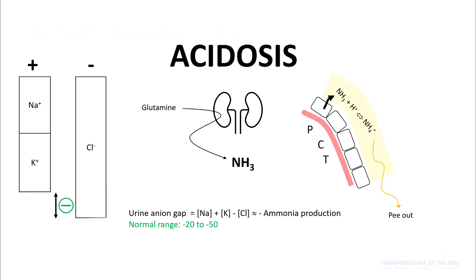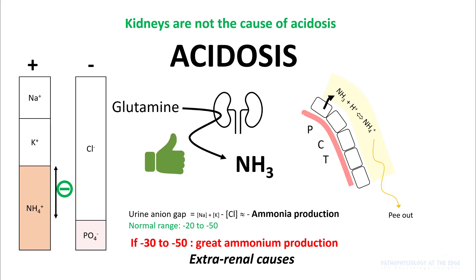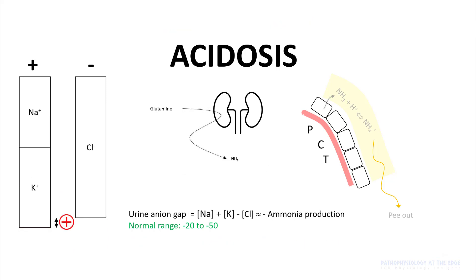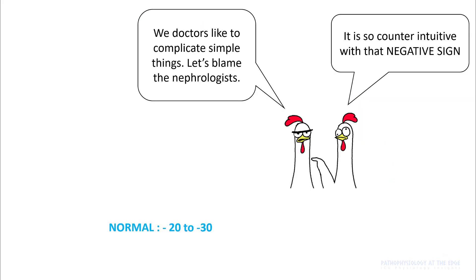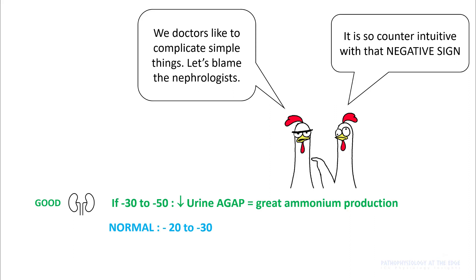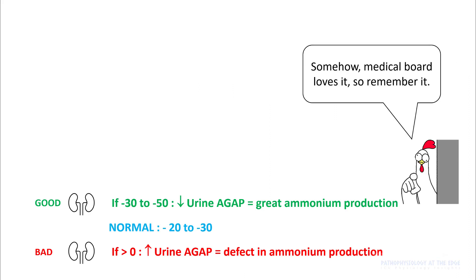As acidosis worsens and your kidneys start making more ammonium ions, your urine anion gap is going to decrease. A urine anion gap between minus 30 to minus 50 means great ammonia production and suggests extra-renal causes. Sometimes RTA type 2 can present like this. If ammonia production decreases, the urine anion gap will increase — any urine anion gap more than zero suggests a defect in ammonia production and is seen in renal diseases and RTA types 1 and 4. This is a little counter-intuitive because of the negative sign, but remember: decreasing urine anion gap means great ammonia production, and increasing urine anion gap means defective ammonia production. Medical boards love this question, so try to remember it.